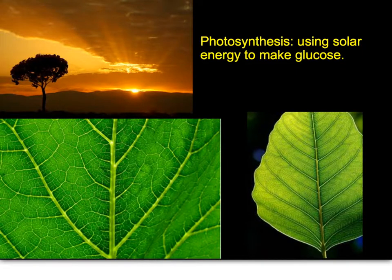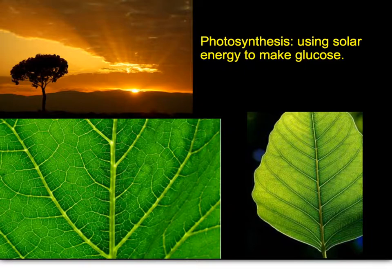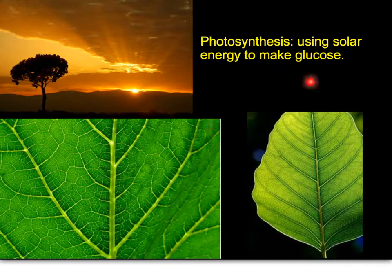Photosynthesis, as we've gotten into in detail in first semester, is where plants use the light energy of the sun to make glucose. It's called photosynthesis — photo indicating light, synthesis indicating that we're synthesizing something. So plants are able to use this light energy to form sugar energy in the form of glucose. They can feed themselves, making their own sugar, and as a result they now have the energy which fuels the rest of the food chains.